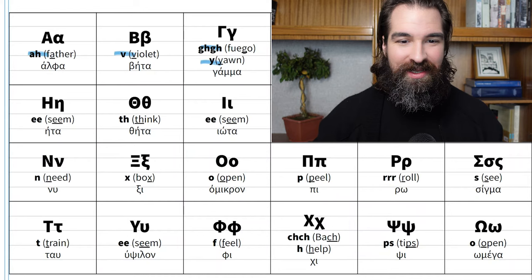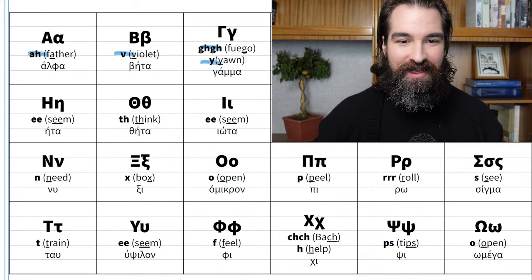An English speaker says 'open' with moving lips. A Greek speaker would say just 'O,' keeping the mouth still — 'open.' You automatically acquire a Greek accent by making that vowel pure. Instead of 'open,' you say 'open.' Omicron looks like an O and sounds like an O.